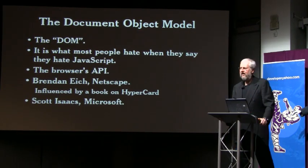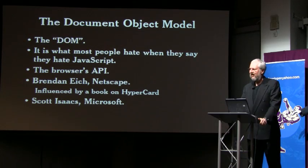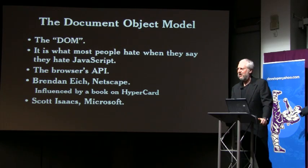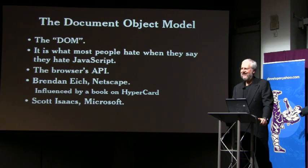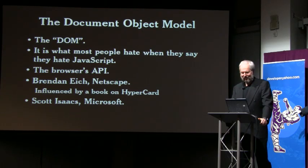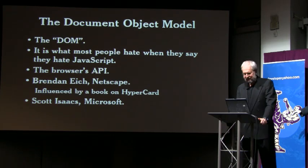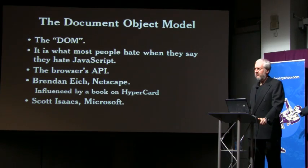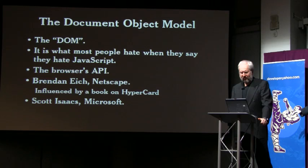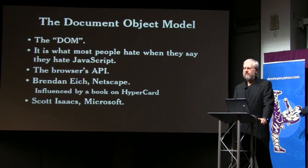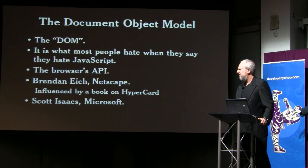On the other hand, there was the Document Object Model — the DOM. It is what most people hate when they say they hate JavaScript. Most of the people who say they hate JavaScript don't know JavaScript — they felt the DOM. The DOM is the browser's API; it is the interface that provides JavaScript for manipulating documents. There were many people involved in the design of the DOM. The first important one was Brendan Eich of Netscape — the inventor of JavaScript. Brilliant stuff in JavaScript; not so brilliant here. He was given a book on HyperCard and told 'make the browser act like that,' and he came up with the level zero DOM.